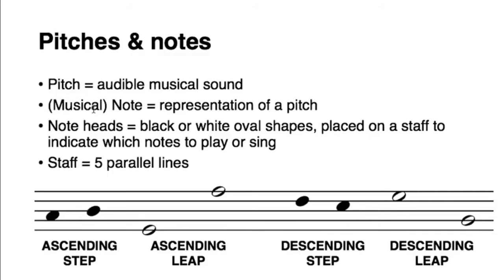Pitches are represented in music by notes, just like sounds are represented in print with letters. Notes are written as black or white oval shapes on a staff. There is a distinction between black and white note heads, but don't worry about it now - just know they can be either filled or unfilled. The staff consists of five parallel lines which create four spaces between them. Note heads are placed on the lines or in the spaces, and each position refers to a different pitch.